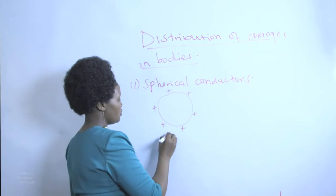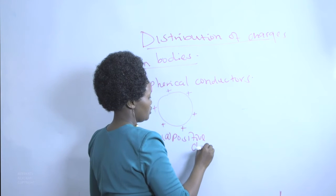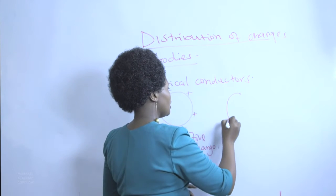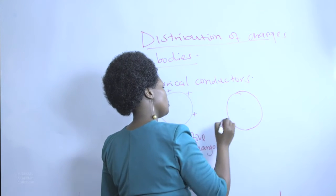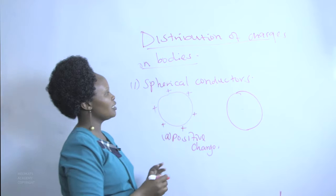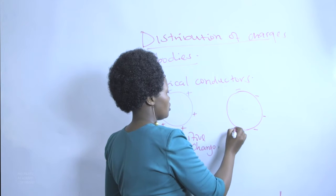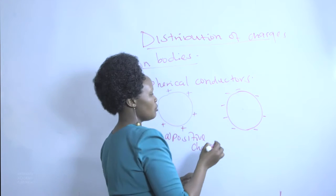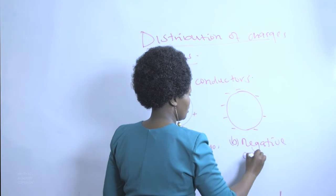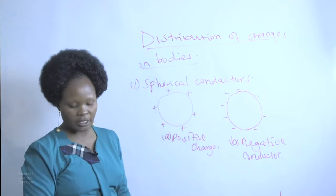This is the case of positive charge. If the charge were negative and we take the same spherical shape, the charges are again going to be distributed evenly on the surface of the conductor. Remember, we are saying on the surface of the conductor — on and not inside the conductor.